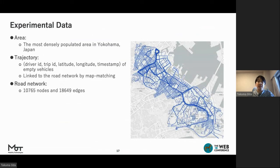Moving on to the next section, let's take a look at the experiment. For data analytics and performance evaluation, we use taxi trajectory collected in the most densely populated area in the city of Yokohama, Japan. The original road dataset contains GPS information of the empty vehicle. The road network in the region contains around 10,000 roads and 18,000 edges.